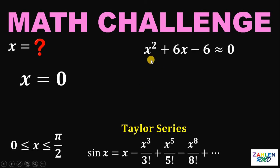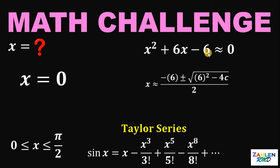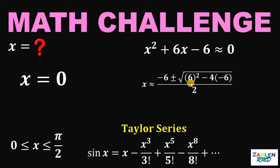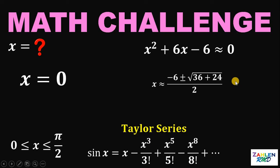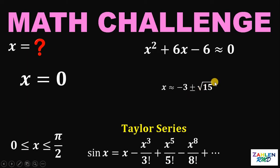Moving on to the second equation: x squared plus 6x minus 6 approximately equals 0. We will use the quadratic formula since this is not factorable. x is approximately equal to negative b plus or minus square root of b squared minus 4ac, all over 2a. Here b equals 6, a equals 1, and c equals negative 6. Simplifying: negative 6 plus or minus square root of 36 plus 24, which is square root of 60, or 2 times square root of 15. This gives us negative 3 plus or minus square root of 15.